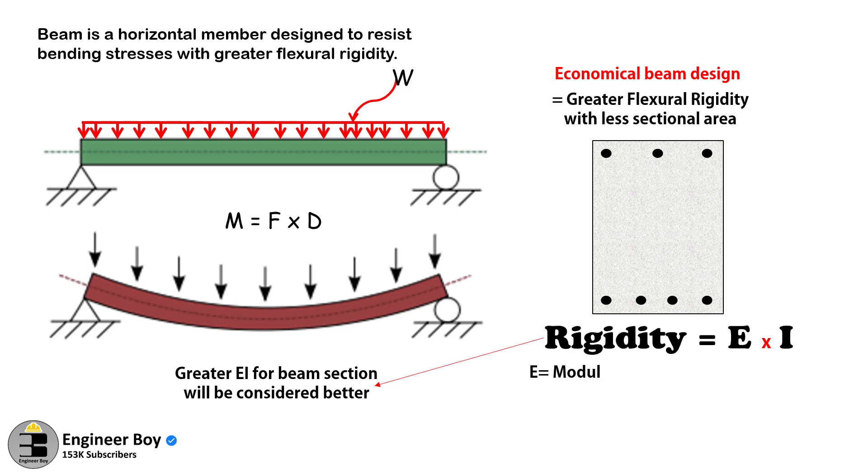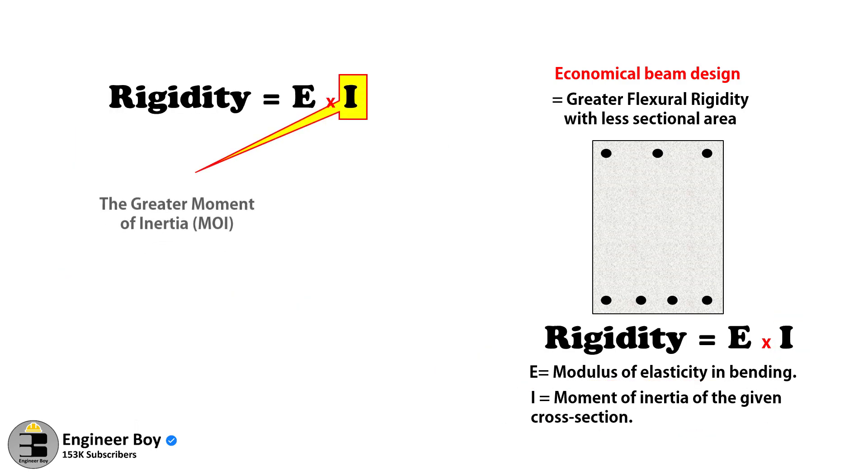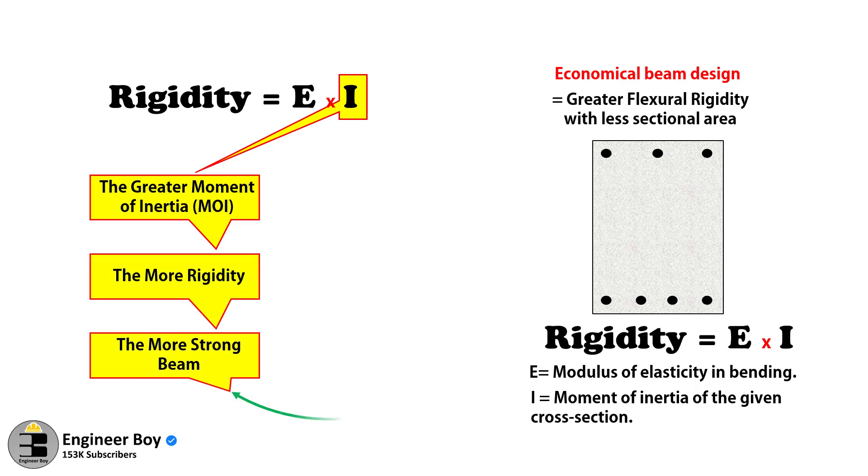Where E is actually the modulus of elasticity of the material and I is the moment of inertia of the given cross-section. So because of EI, we can say that the capability of a beam depends upon its moment of inertia. So the greater the moment of inertia, the more resistance to the moment is achieved in the beam.